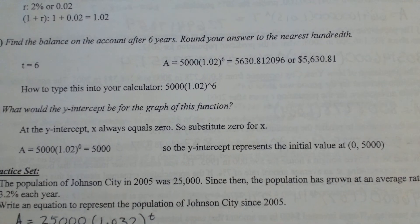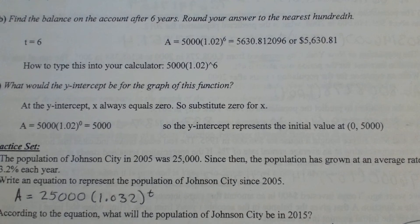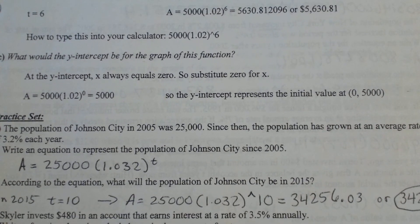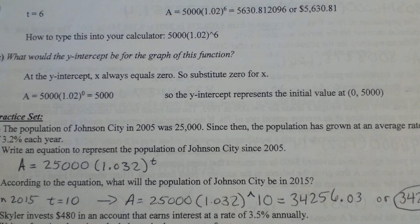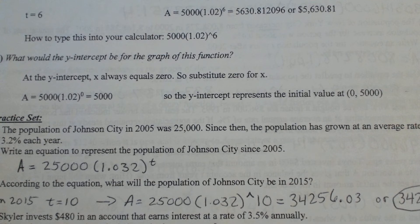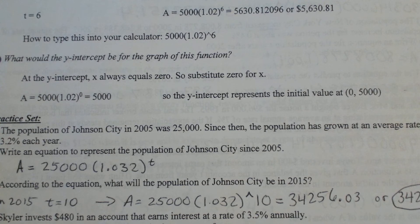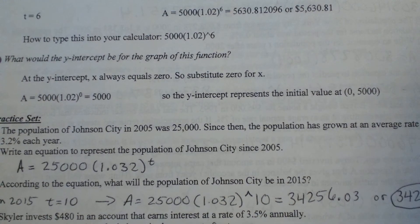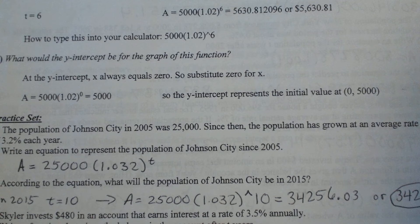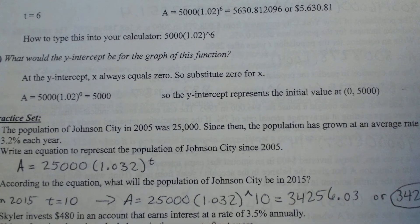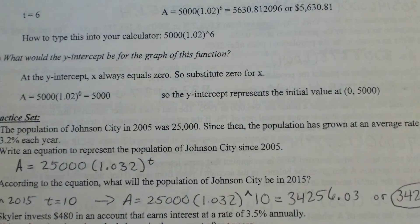So there's just a lot of practice with that today. I'll go through one more example with you there. A second example would be the population of Johnson City in 2005 was 25,000. Since the population has grown at an average rate of 3.2%, write the equation for the population of Johnson City since 2005.